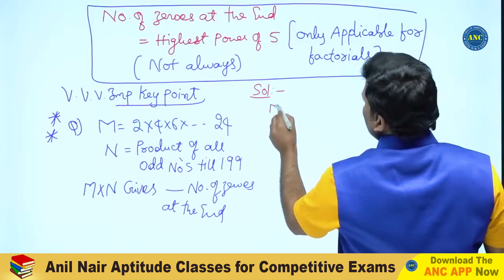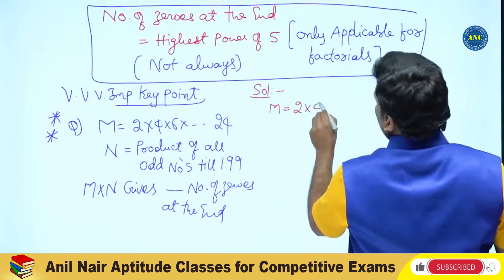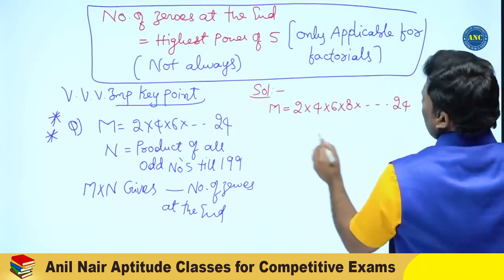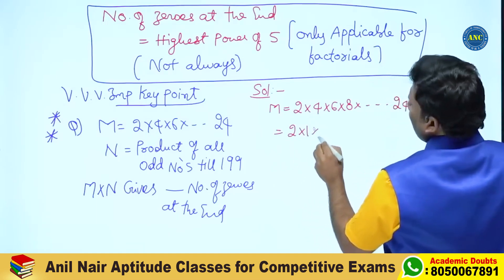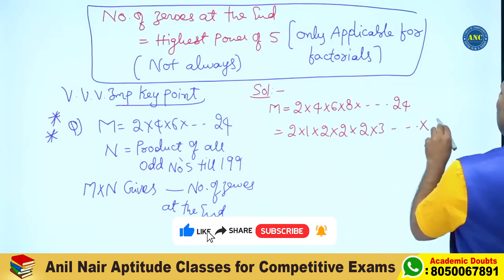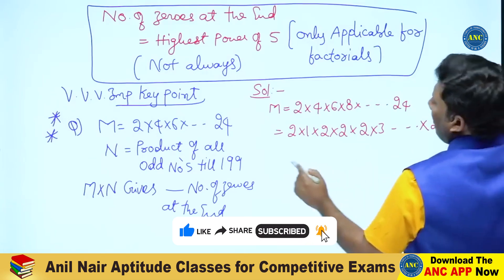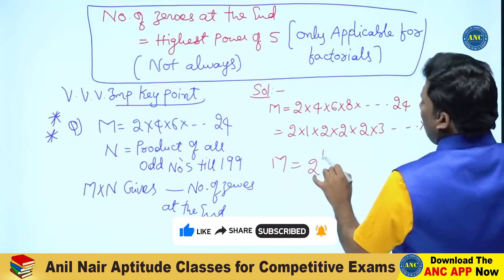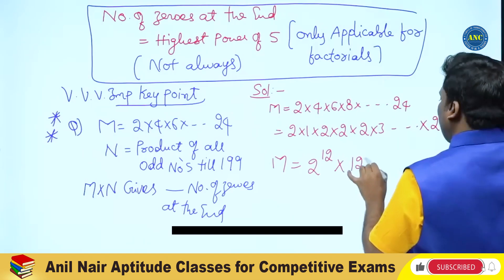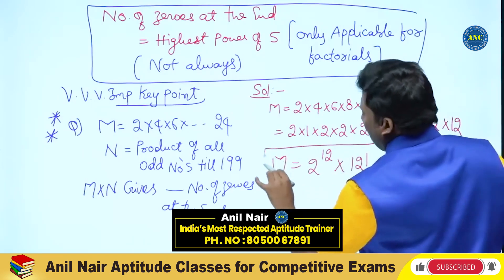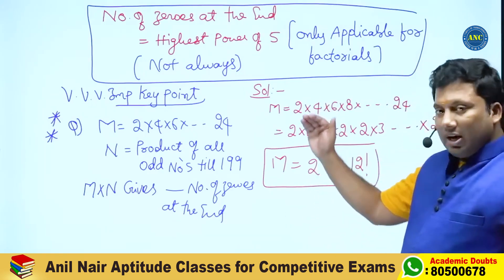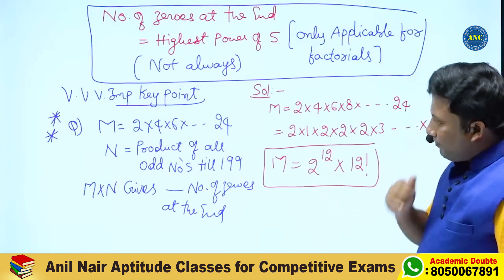Let me create a new question. M is 2 into 4 into 6 into 8 and so on up to 24 — the product of all even numbers. This can be written as 2 multiplied 12 times, into 1 into 2 into 3 till 12, which is 12 factorial. So M equals 2 to the power 12 into 12 factorial.